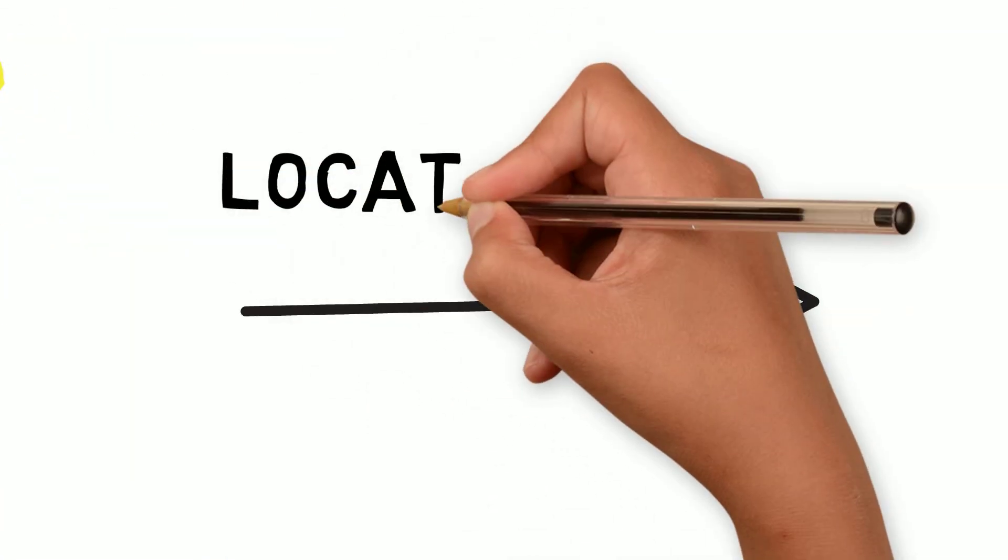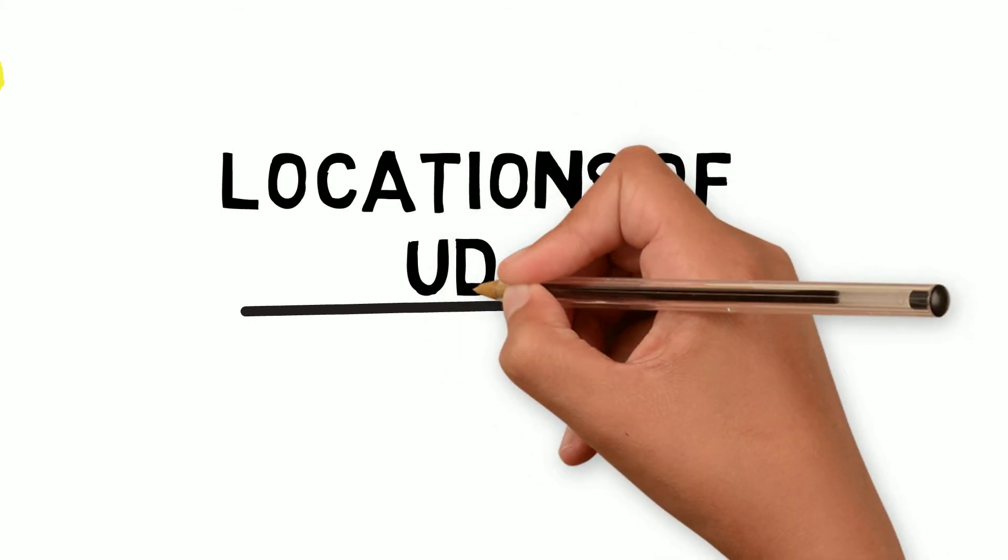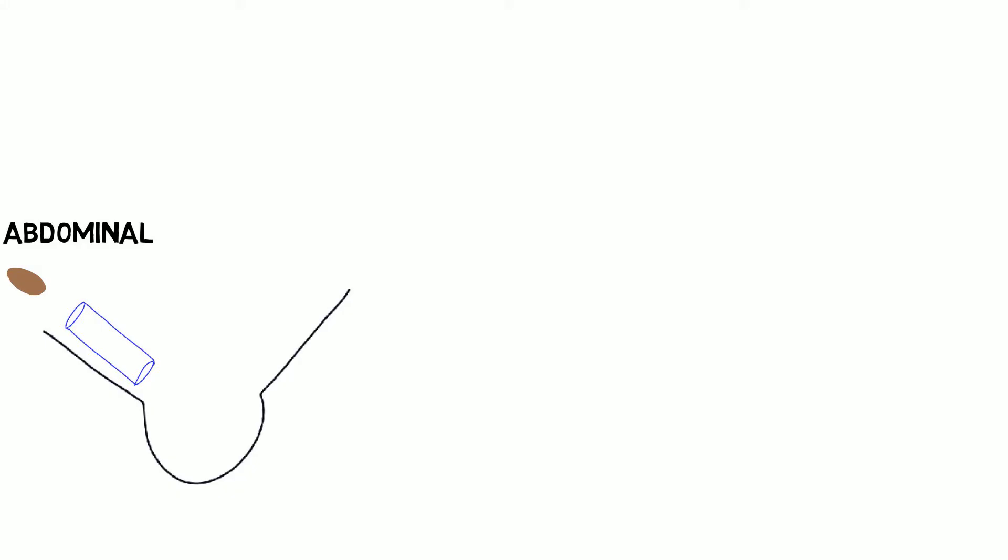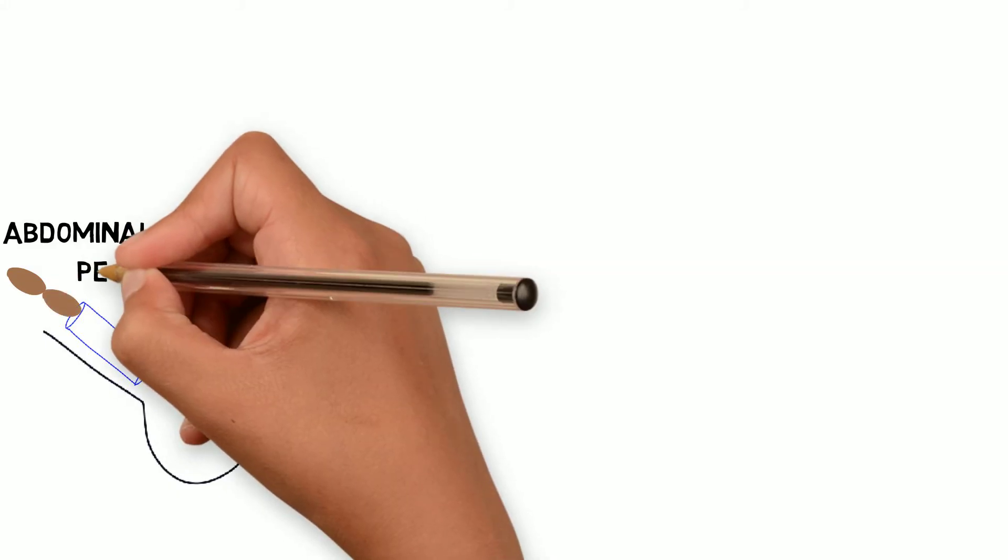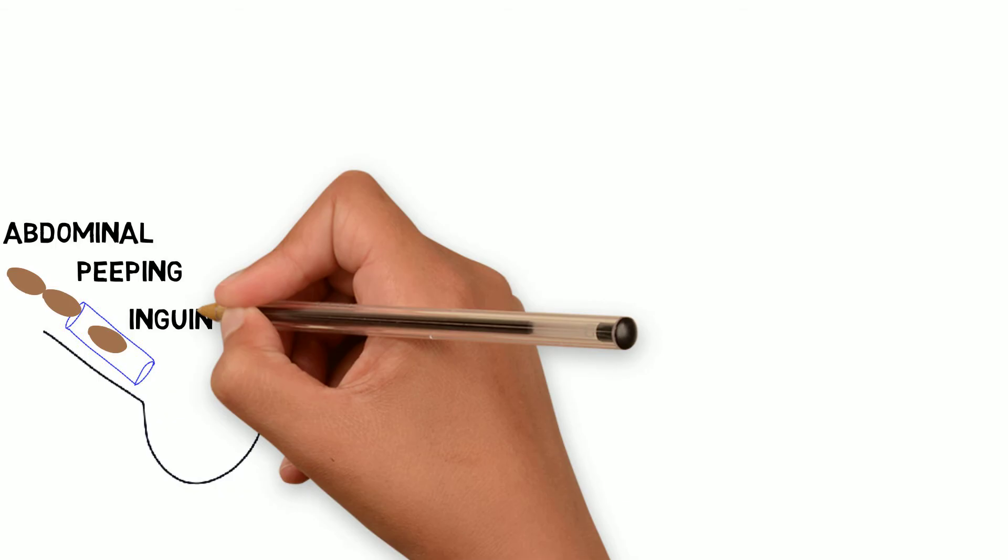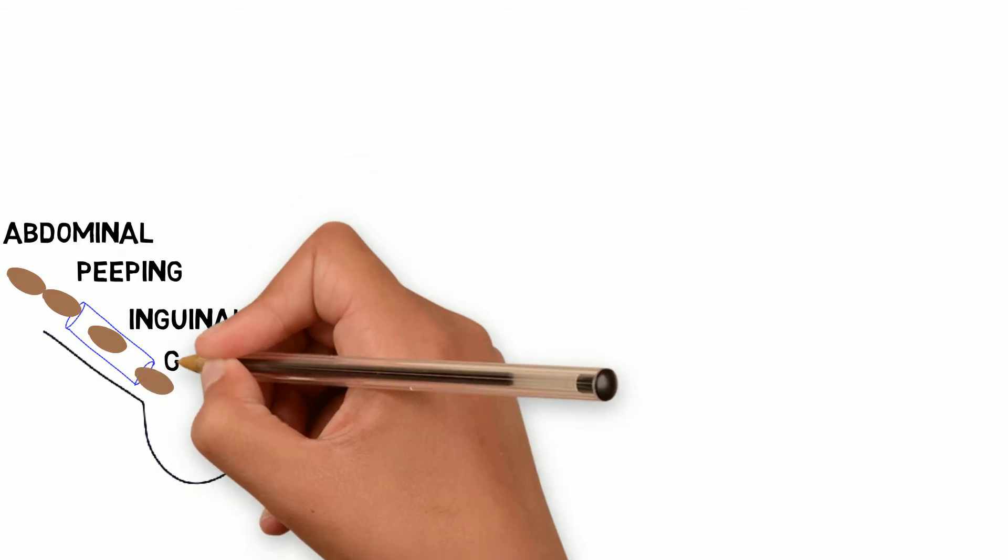Let us see the locations of undescended testis in the inguinal canal. There are 4 locations: first is abdominal, second is peeping, that is, it is in the abdomen but intermittently peeps into the inguinal canal, third is inguinal, and fourth is gliding, also known as high scrotal.